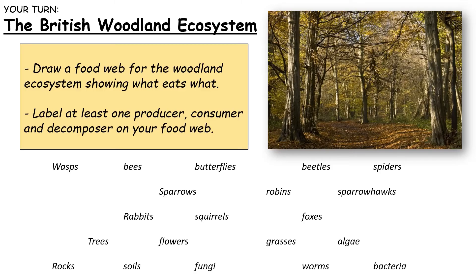Here's an example of the British woodland ecosystem. If you'd like to have a go, you can try to draw your own food web for these parts of the woodland ecosystem, and then see if you can label at least one producer, one consumer and one decomposer on the food web. Pause now if you wish.